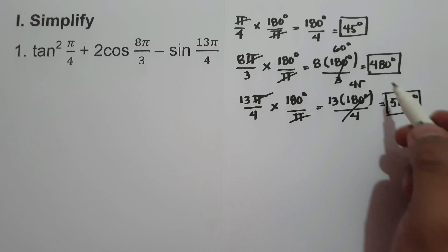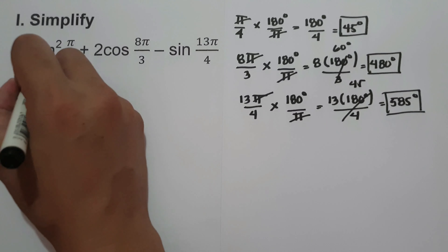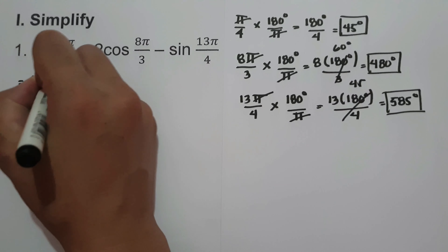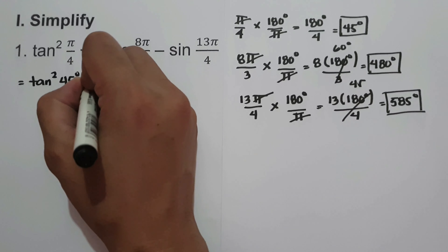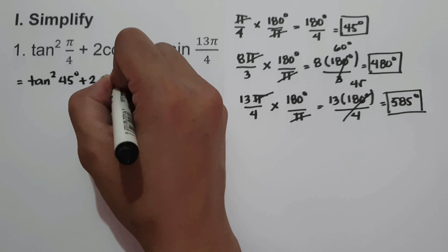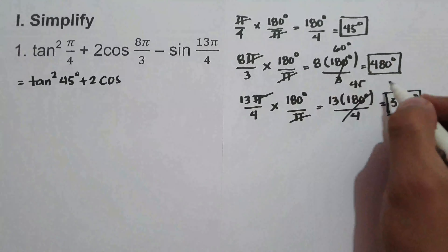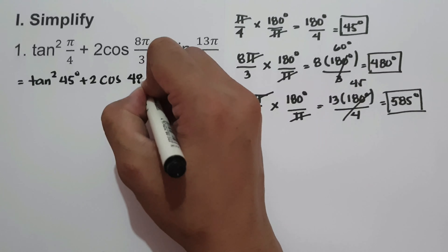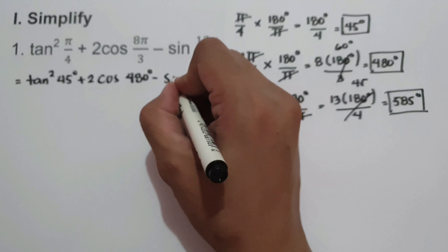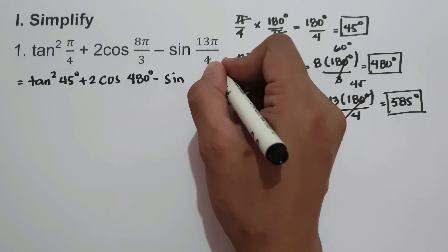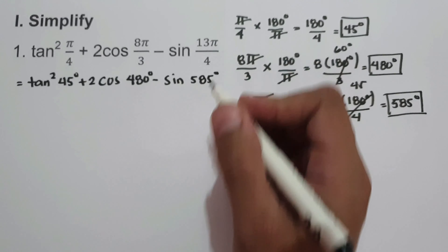Let us substitute these values into the given trigonometric function: tangent square 45 degrees plus 2 cosine 480 degrees minus sine 585 degrees.